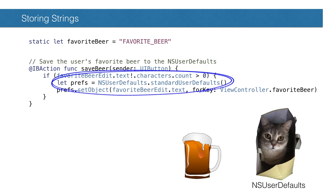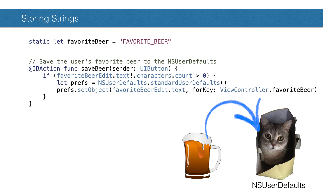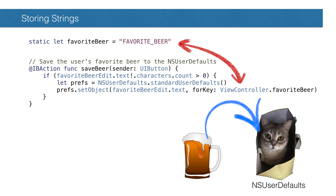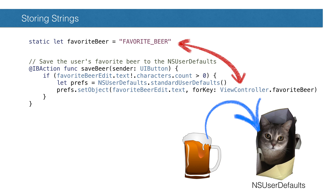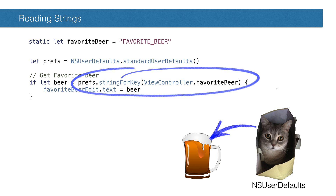To start, we'll get a reference to the standard user defaults. Let's start with the favorite beer — this example is most straightforward. We'll just call setObject with the string we want to store, and the string key we want to use to get it later. Notice we're using a constant for the key. This is a practice we want to make a habit. If we hard-code the constants in our code, it's very easy to screw up the case or mistype the string. If we use a constant, the compiler will let us know if we typed it wrong. To get it back out, we call stringForKey. It's kind of weird that it goes in as an object and back out as a string, especially since strings are structs, but that's where we're at.